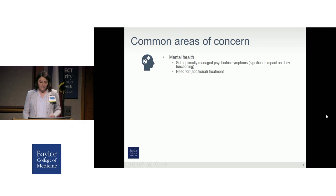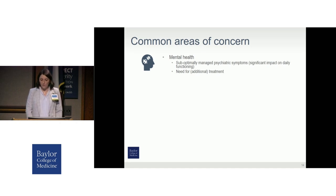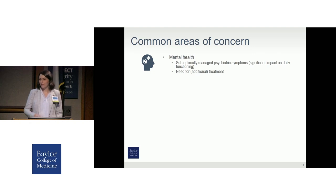Here is a list of common areas of concern. When it comes to mental health, concerns include suboptimally managed psychiatric symptoms or a need for treatment — for example, a patient who's reporting severe depressive symptoms and is not in any form of treatment, or someone reporting severe depressive symptoms despite being on psychotropic medications. The first patient may be required to initiate therapy or speak with their PCP about medication options; the second may benefit from a referral to psychiatry for medication optimization.